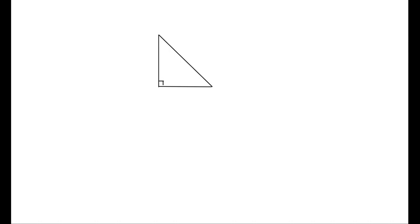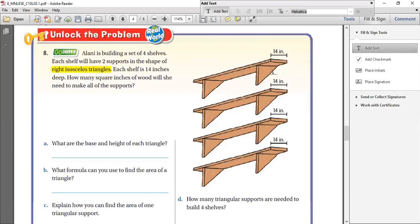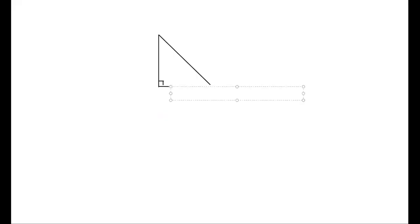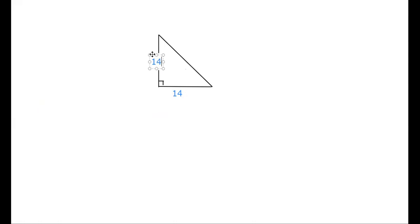Now let's go back to the question. Each shelf is 14 inches deep — you can see that they have shown this part. This is the base. If you look at the picture very carefully, this is the base. So base is 14. Now, what's the other side going to be if it's an isosceles triangle? If this side is 14, this side is also going to be 14 — because in an isosceles triangle, two sides are equal. So if this is 14, this is also 14, which means the height is also 14. The base is 14 and the height is also 14.